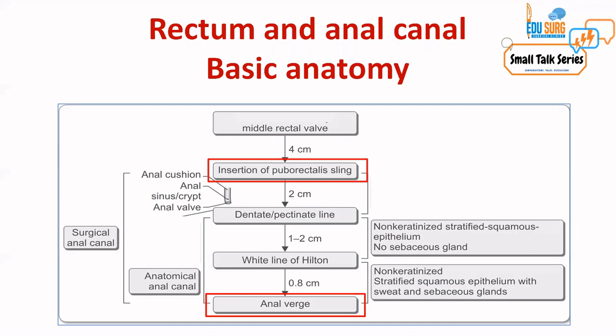Two important landmarks for the rectum: the puborectalis sling, which you can palpate on per-rectal examination by asking the patient to constrict the sphincter, is at 4 to 4.5 centimeters from the anal verge. The middle rectal valve is at 8 centimeters from the anal verge. We will see this in detail in the next video.